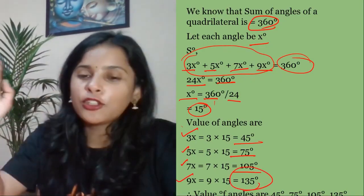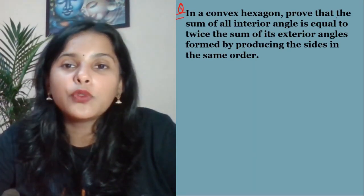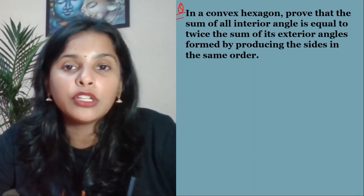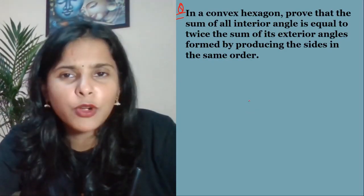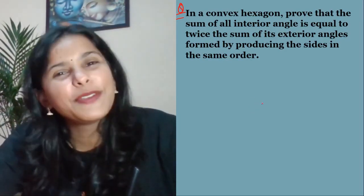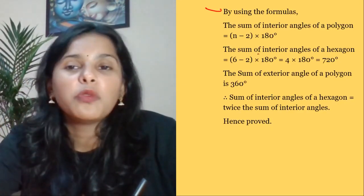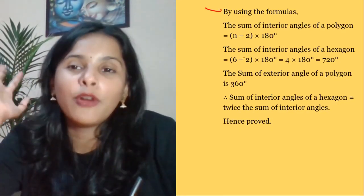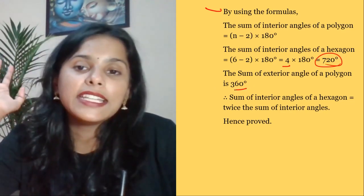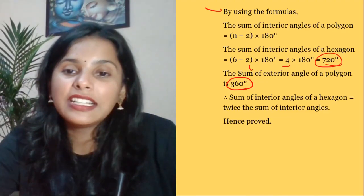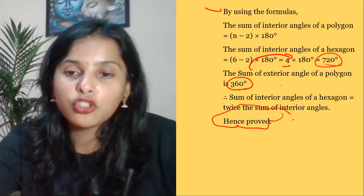Question 6: In a convex hexagon, prove that the sum of all interior angles equals twice the sum of its exterior angles. Sum of interior angles of a polygon = (n−2) × 180. For a hexagon, n = 6: (6−2) × 180 = 4 × 180 = 720 degrees. Sum of exterior angles = 360 degrees. Twice the exterior angles = 2 × 360 = 720. Hence proved.